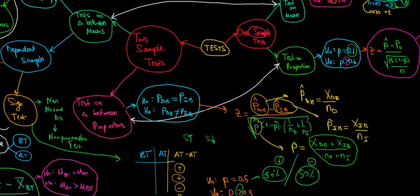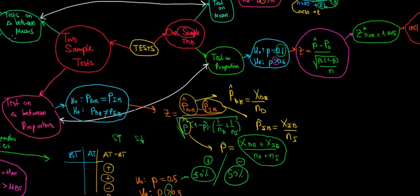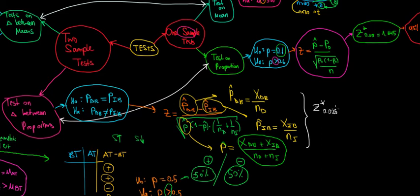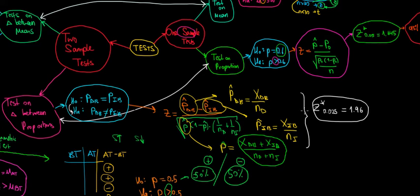Once we compute the z-value, we need the critical value. The z critical value assumes an infinitely large sample size, so we don't rely on degrees of freedom. At a 5% significance level, the critical value is z at 0.025 on one tail, which equals 1.96. If we reject the null hypothesis, it means we have enough evidence that the proportion of Dutch students who ride bicycles differs from the proportion of international students who ride bicycles.